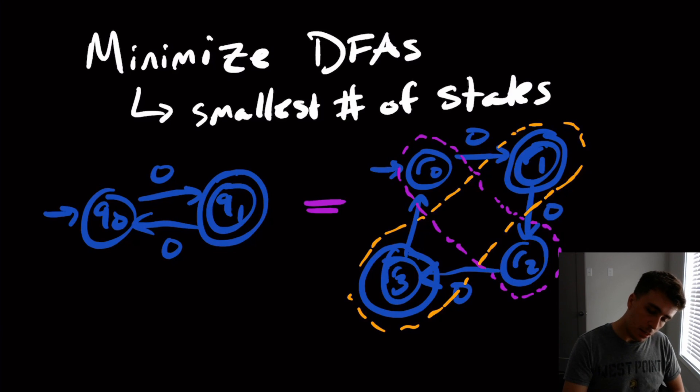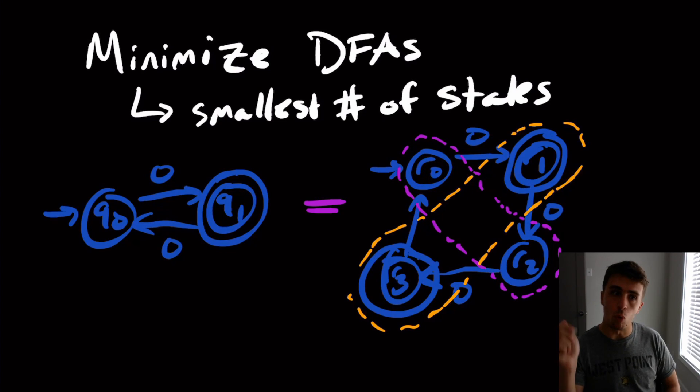So if you think about it, if you're in the orange, one of the orange two states, then whatever you do, from whichever one you are in, you will always go to a purple state. And if you're in one of the purple states, you go to one of the orange states. And further, it's not possible for a string, two different strings, such that if we're in the purple states, one of them is accepted and one of them isn't. Because both of the states here are not final, and both of the states here are final.